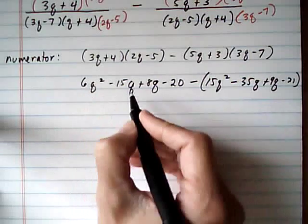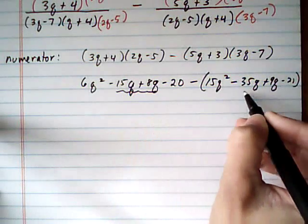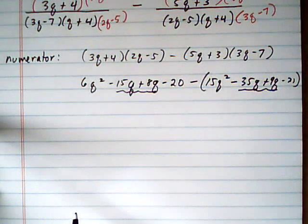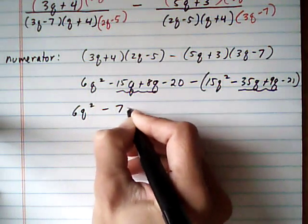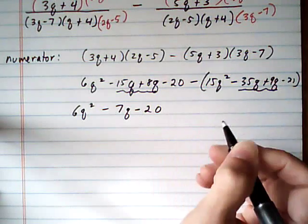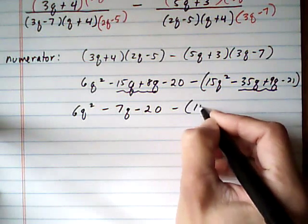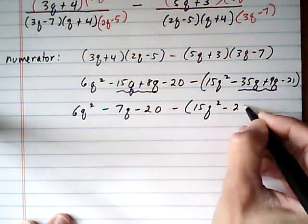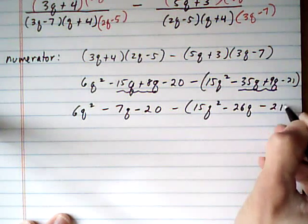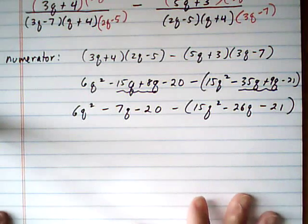15q squared minus 35q plus 9q and take away 21. So that gives me, let's see, let's simplify a little bit within here and combine our like terms that we've got. 6q squared minus 7q minus 20. Take away parentheses, 15q squared minus 26q minus 21.